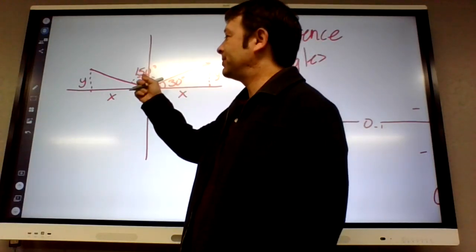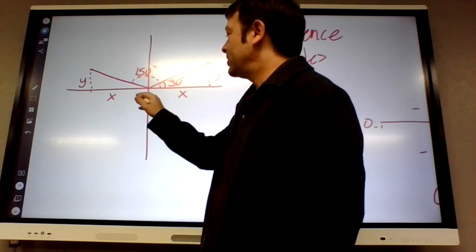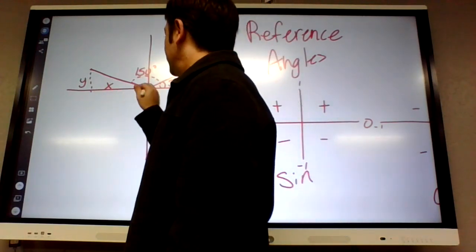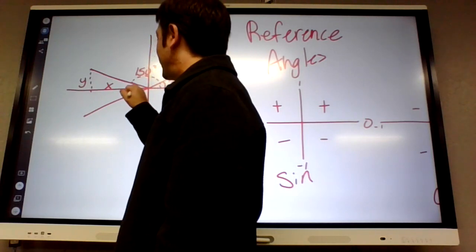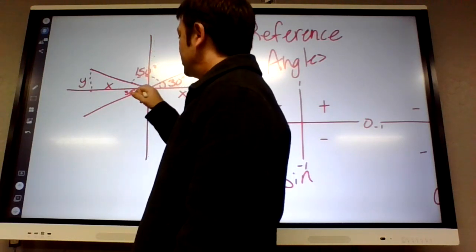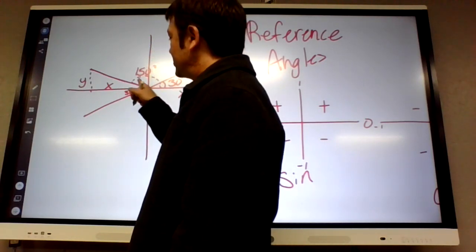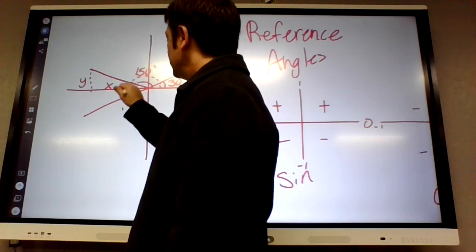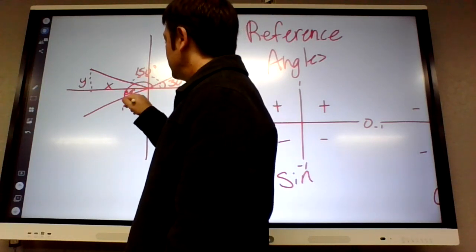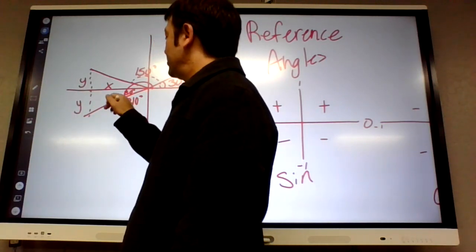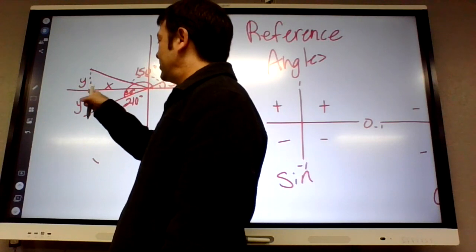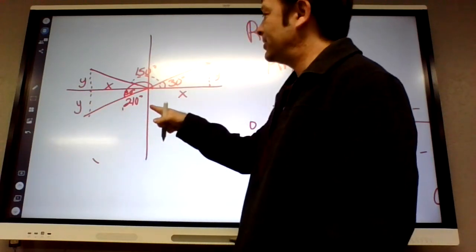That means basically the sine of 30 will equal the sine of 150, the exact same thing. Okay, and you'll get the same effect if you go down into the third quadrant. If you're 30 degrees past 180, so in other words if you're 180 plus 30, which is 210, you'll have the same ratio. The only difference is the y value is negative down here, so sine is negative down here.